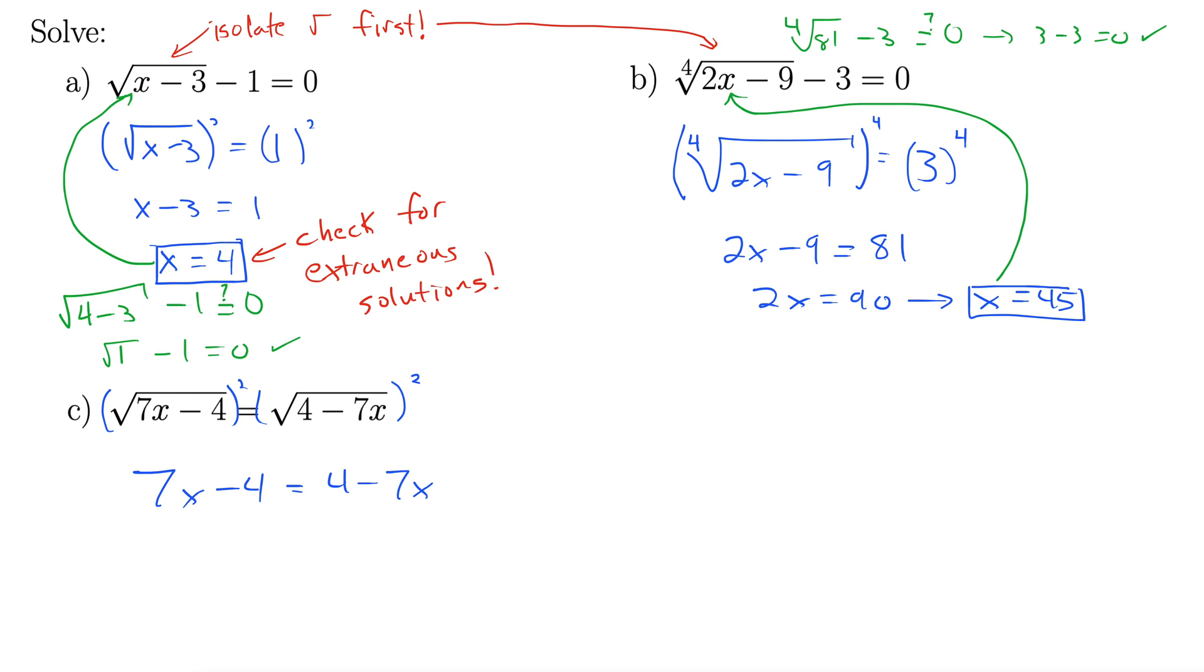Alright, get all the x's on the left, everything else on the right. So I'm going to add 7x to both sides. That gives us 14x. And then I'm going to add 4 to both sides equals 8. Alright, well then x must be 8 fourteenths. Well, we can cancel the 2 out of the 8 and the 14. So this leaves us with 4 sevenths.